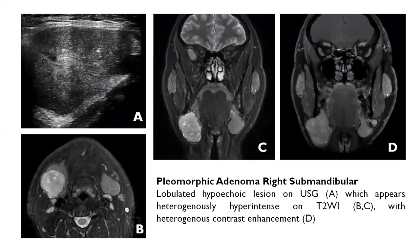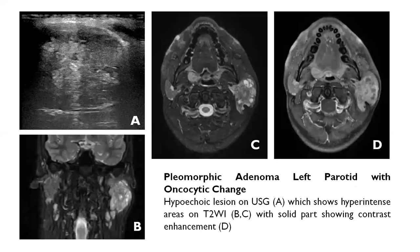Here is a pleomorphic adenoma of the right submandibular gland. It appeared lobulated and hypoechoic on ultrasound, and on MRI it was hyperintense on T2 with heterogeneous contrast enhancement. Here is a pleomorphic adenoma of the left parotid showing oncocytic change. The lesion appeared hypoechoic on ultrasound, with hyperintense areas on T2 indicating the oncocytic change, while the solid part showed contrast enhancement.